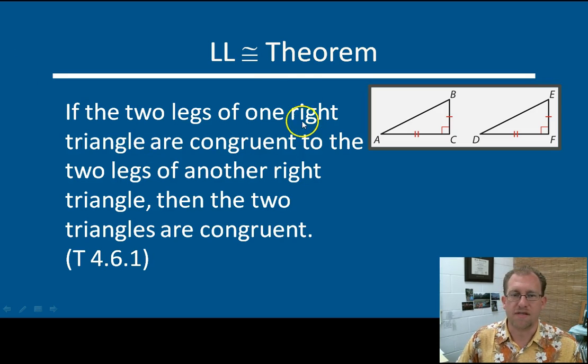So let's run through these theorems. The leg leg theorem says that if the two legs of one right triangle are congruent to the two legs of another right triangle, then the two triangles are congruent. Okay, that's the formal description of it. And again, you can just see if I have a leg and another leg that are congruent to two legs of another right triangle, I get these angles for free. So I have side angle side or in a right triangle, we call it leg leg.